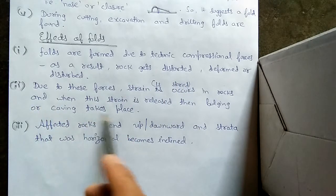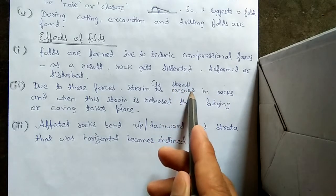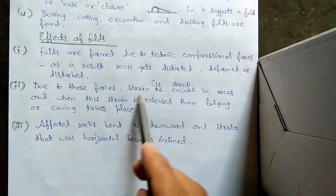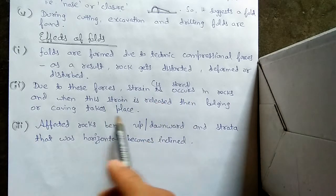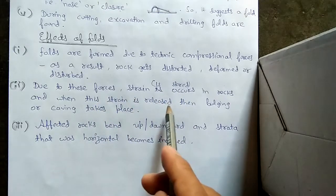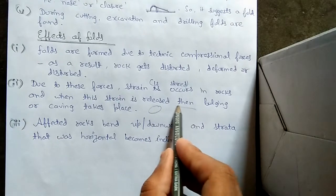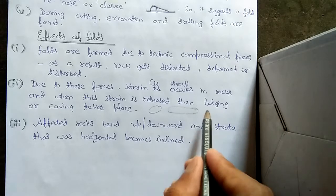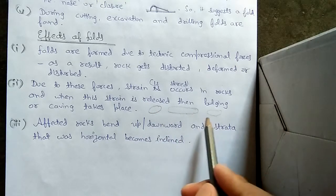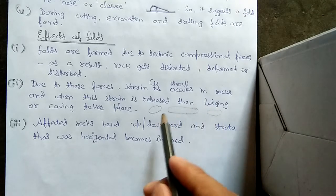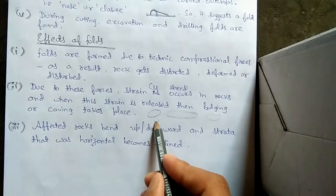The second effect: due to these forces, strain or stress is stored in rocks. Due to these forces, when we apply forces, the rocks store some strain or stress in them. When this strain is released, then bulging or caving takes place. Suppose I have a rubber and I stretch it. When I release it, it will again come to its original position. Just like that, as this rubber stores tension and when released it comes back to its original position, this happens with rocks.